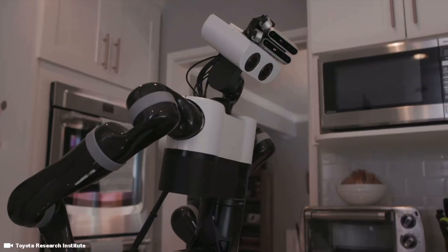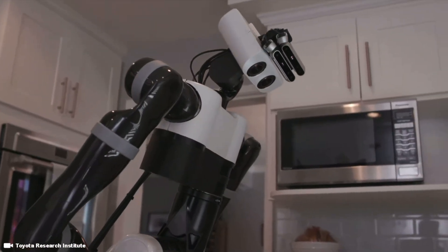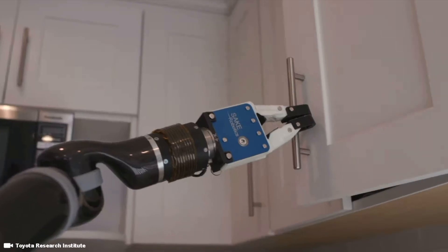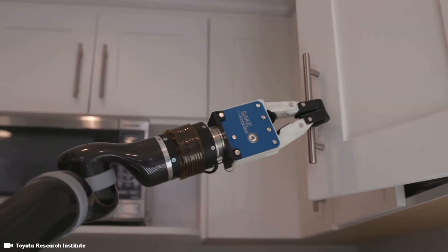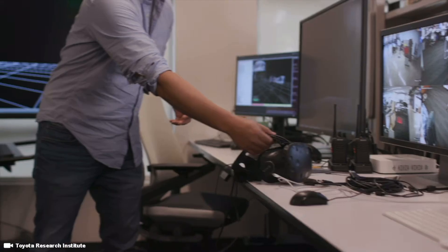So, rather than try to program a robot to do a specific set of tasks, like an assembly line robot, our robot can learn new skills from a human teacher. We teach the robot in VR, or virtual reality.